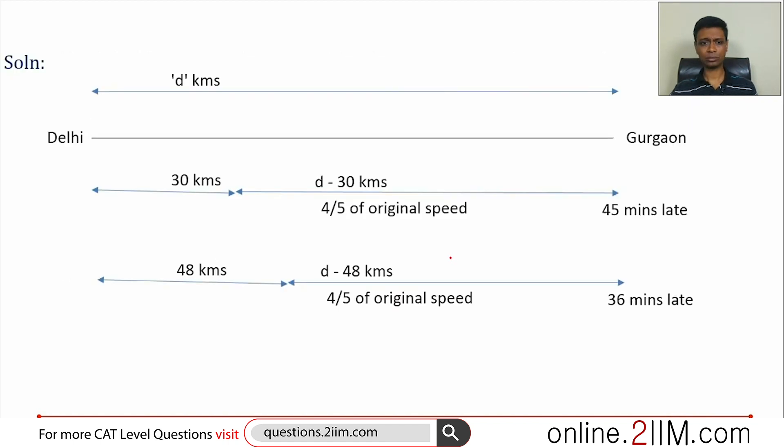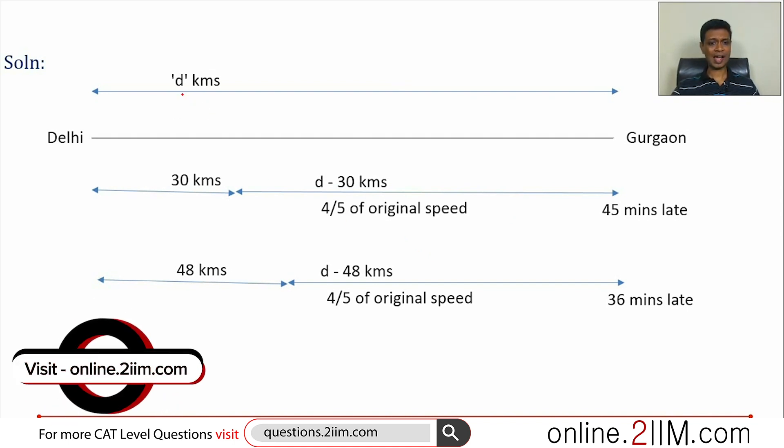I'm going to draw the diagram. Delhi to Gurgaon, assume the distance is d kilometers. After 30 kilometers, some malfunction happens, and then the remaining d-30, he travels at four-fifths of the speed and reaches 45 minutes late. Next time, after 48 kilometers, the same malfunction happens. The remaining d-48, he travels at four-fifths of the speed and reaches 36 minutes late.